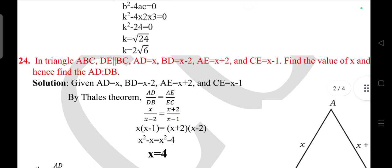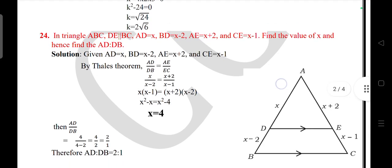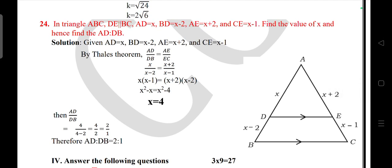Question 23: Solve the quadratic equation x² + 3x + 2 = 0 by factorization method. Or find the value of k for which quadratic equation 2x² + kx + 3 = 0 has real equal roots. Question 24: In triangle ABC, DE parallel to BC, and AD = x, BD = x - 2, AE = x + 2, and CE = x - 1. Find the value of x and hence find AD:DB.